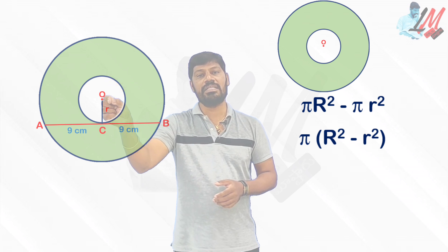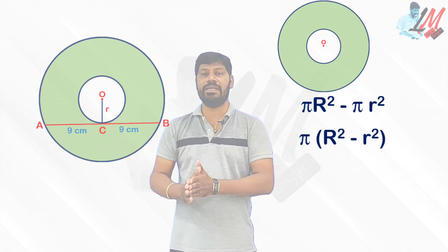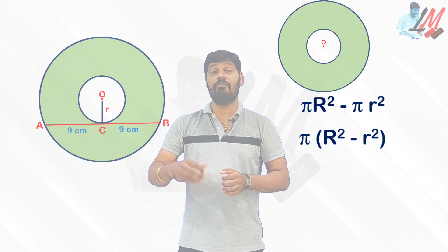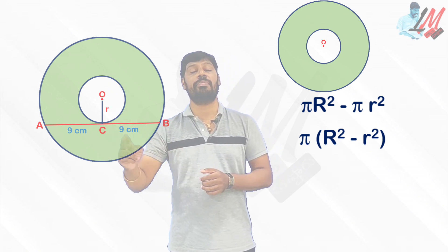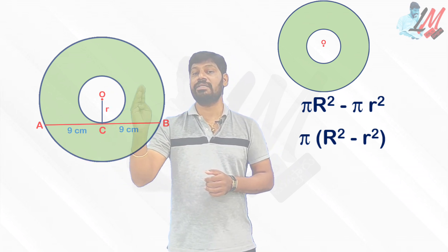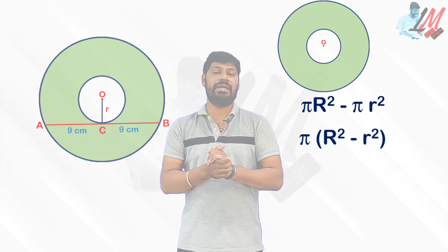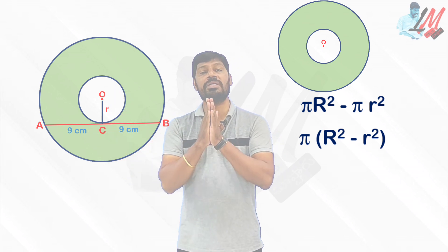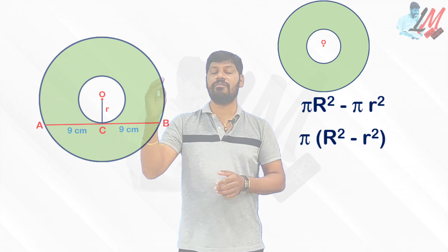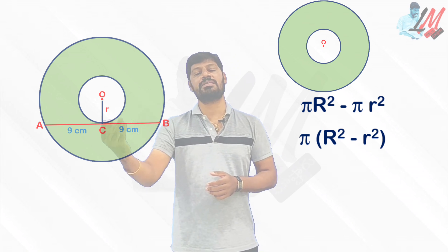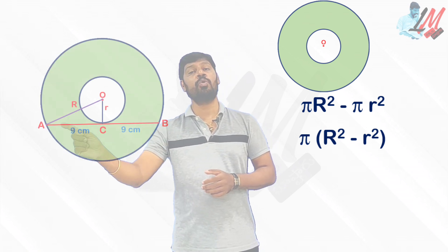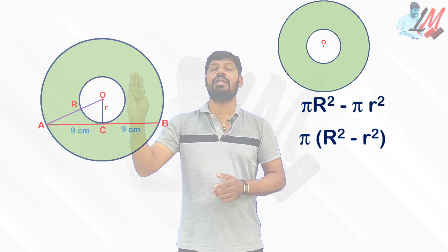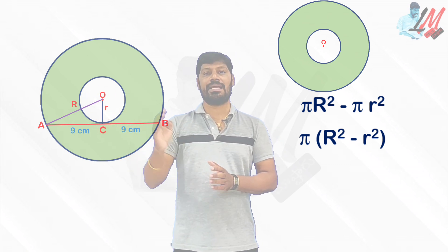This joining is going to be the radius. Let me consider the point of tangency as C. We know that the radius is perpendicular to the tangent, so angle C will be 90 degrees. OC is the radius of the small circle — let me call it small r — and OA is the radius of the big circle — capital R.